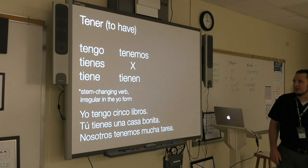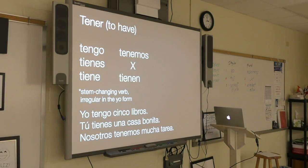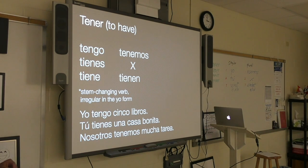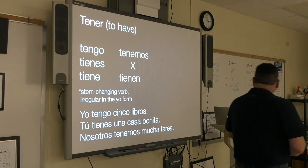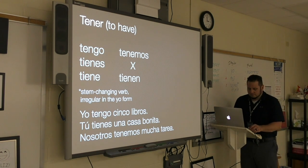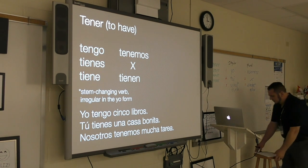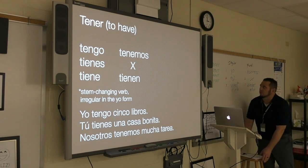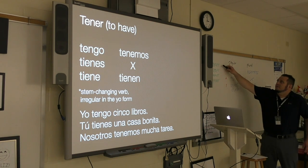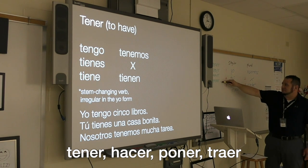Tener is an unusual verb because it is a stem-changing verb — that is something we will talk about in the next chapter in more detail. It is also irregular in the yo form. There are four unique verbs you will encounter in this chapter that are all irregular in the yo form, written here on the board: tener, hacer, poner, and traer.